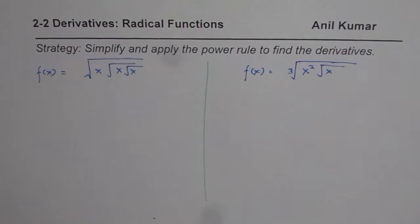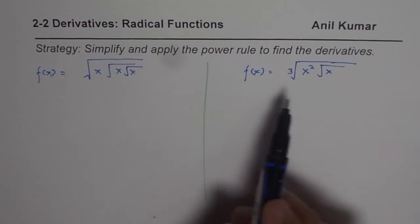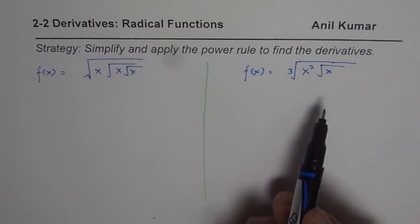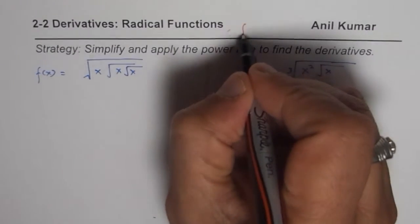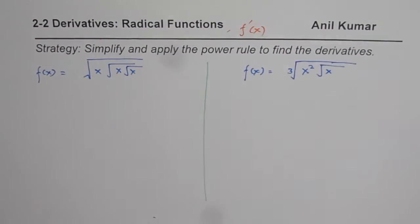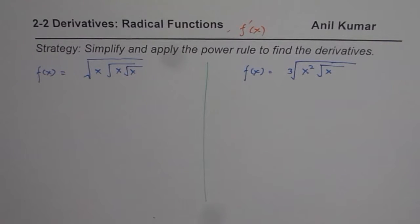So we can have a function something like this also. Now you need to find derivative of this function at any point in general. So the question here is find f dash x for both the functions. You can pause the video, answer the question and then look into my suggestion.